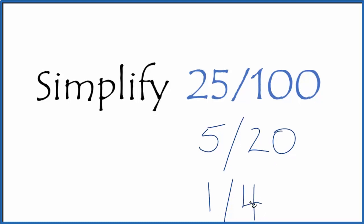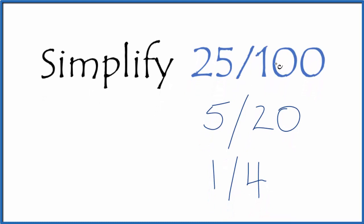So 1 fourth is a simplified fraction for 25 over 100. All these numbers equal 0.25. They're equivalent.